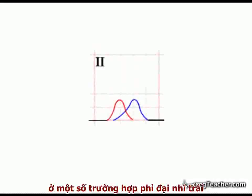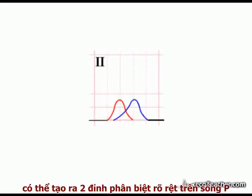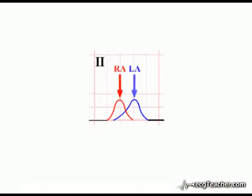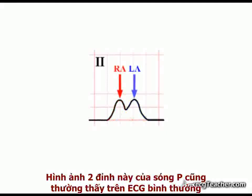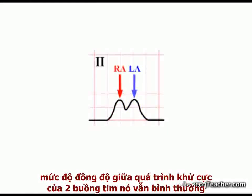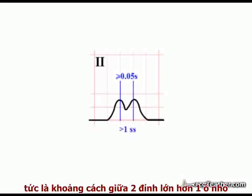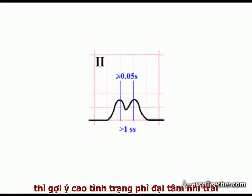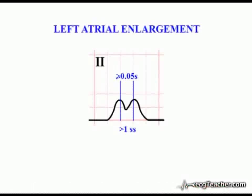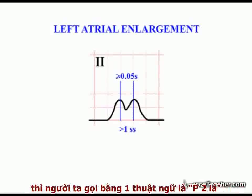In addition, in some cases of left atrial enlargement, increased asynchrony in the depolarization of the chambers may result in two readily identifiable separate peaks in the P-wave due to right and left atrial depolarization. This notched morphology in P-waves is commonly seen in normal ECGs, as a degree of asynchrony between the two chambers is quite normal. However, if the separation between the two peaks is equal to or greater than 0.05 seconds — one small square or more — this is highly suggestive of left atrial enlargement. A notched P-wave with this diagnostic degree of separation is referred to as P-mitrale.